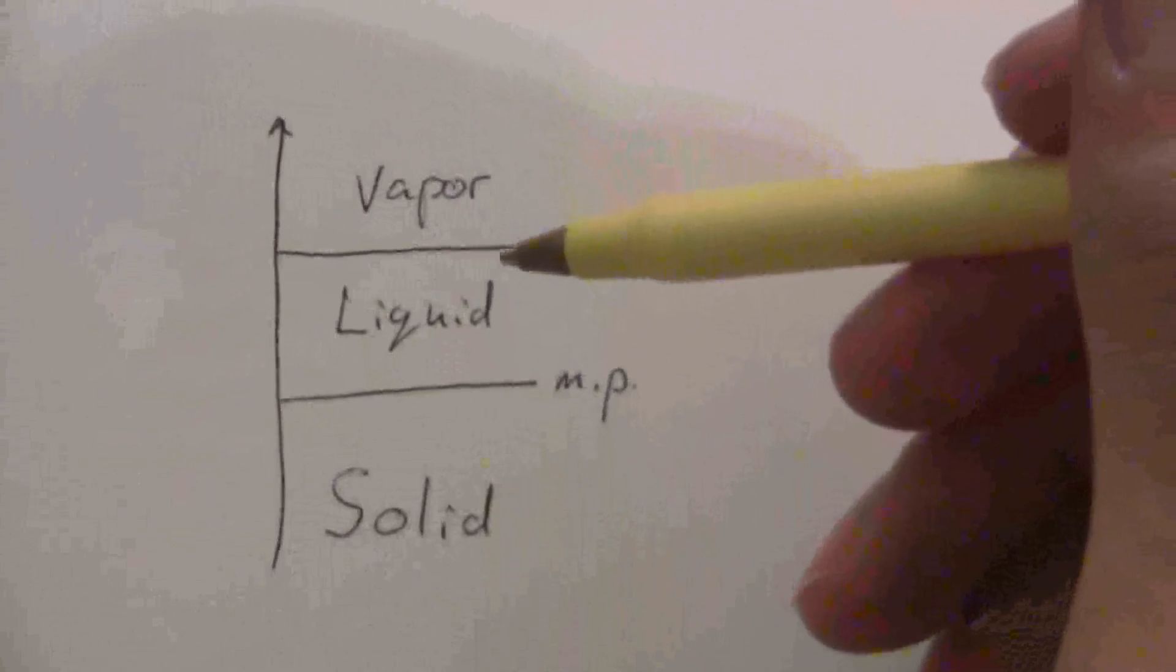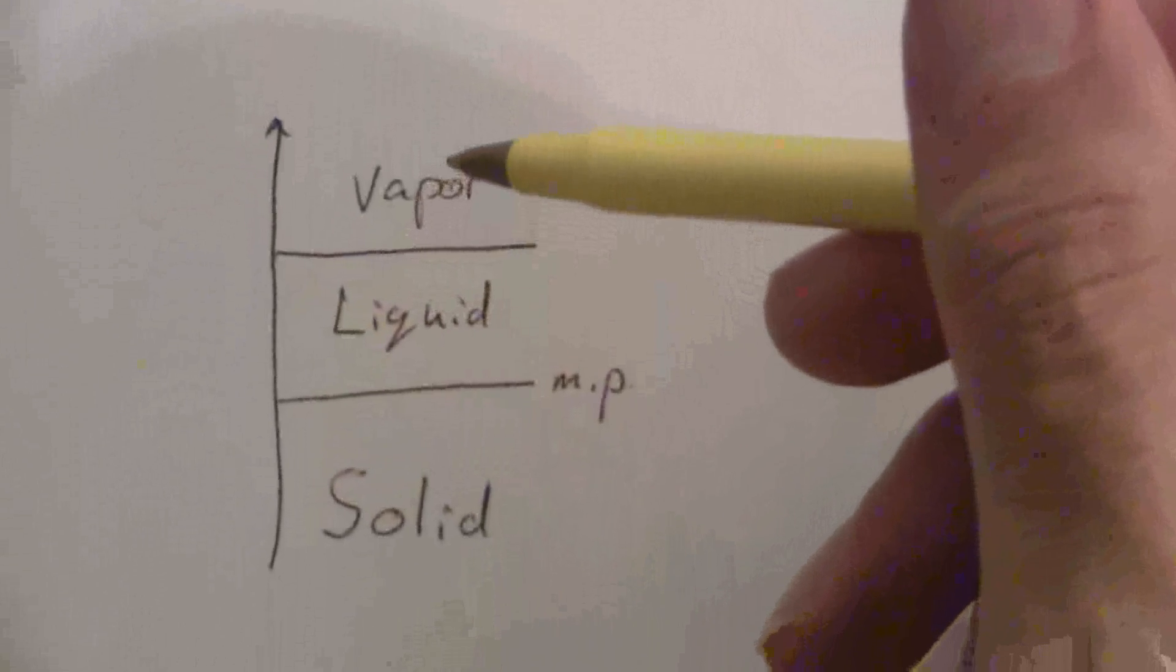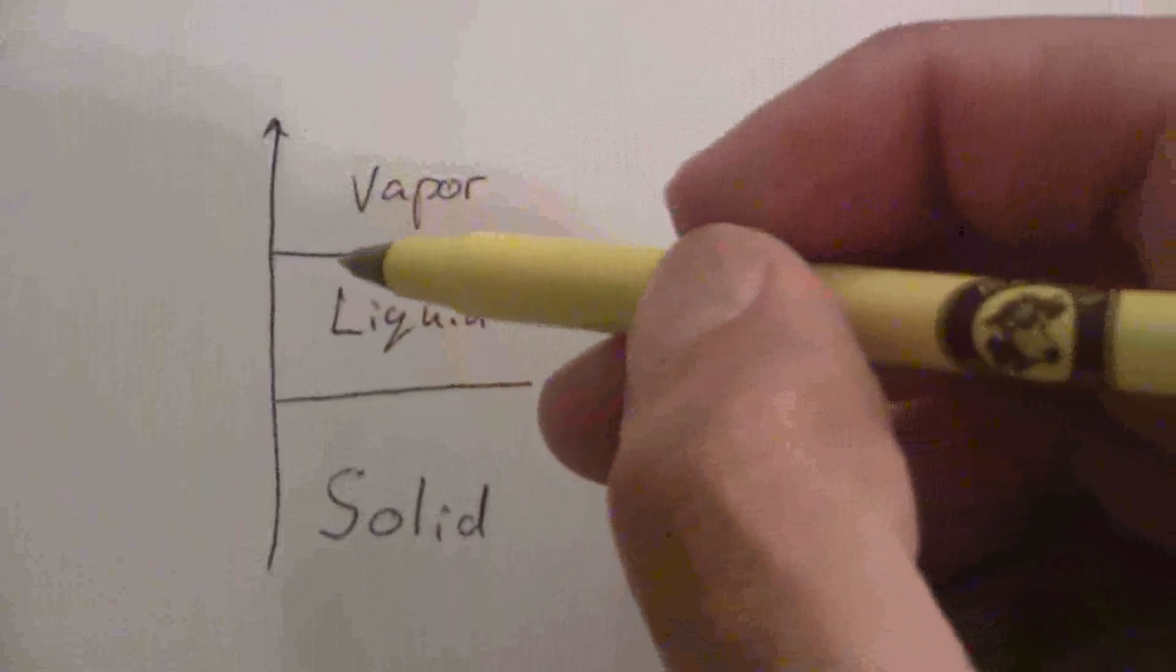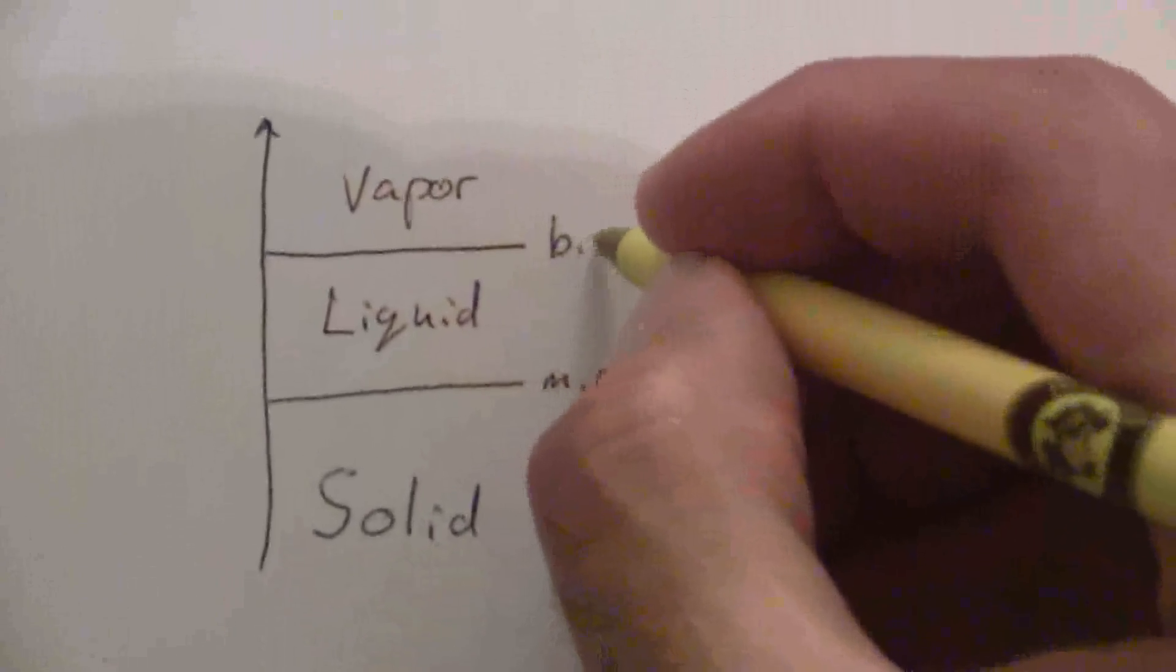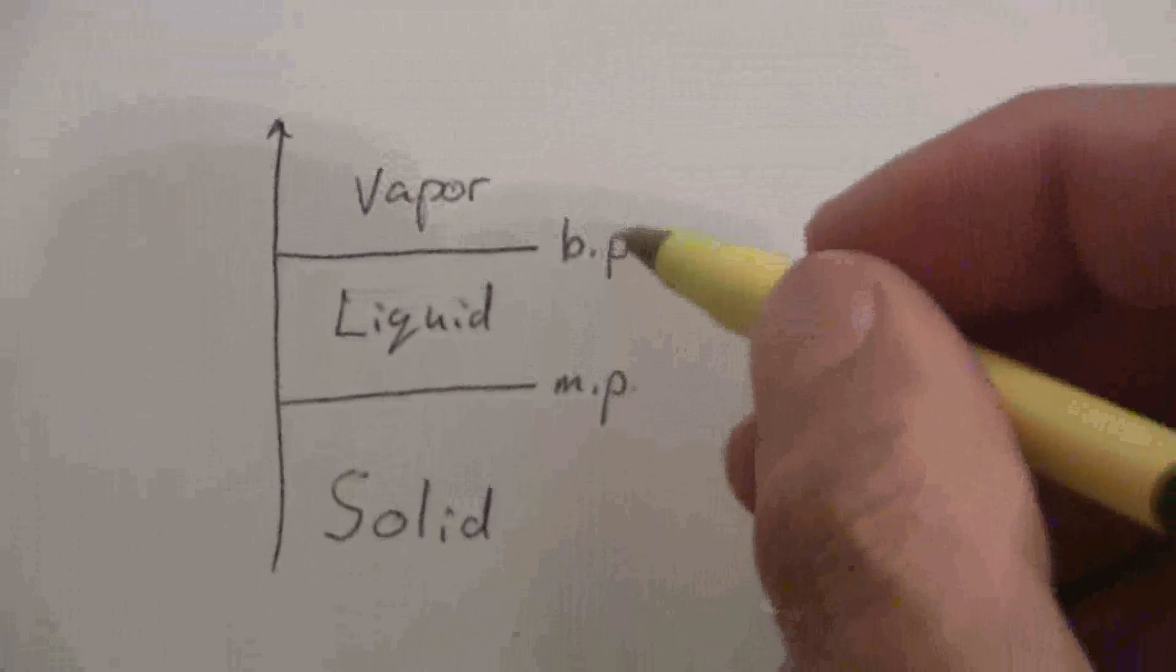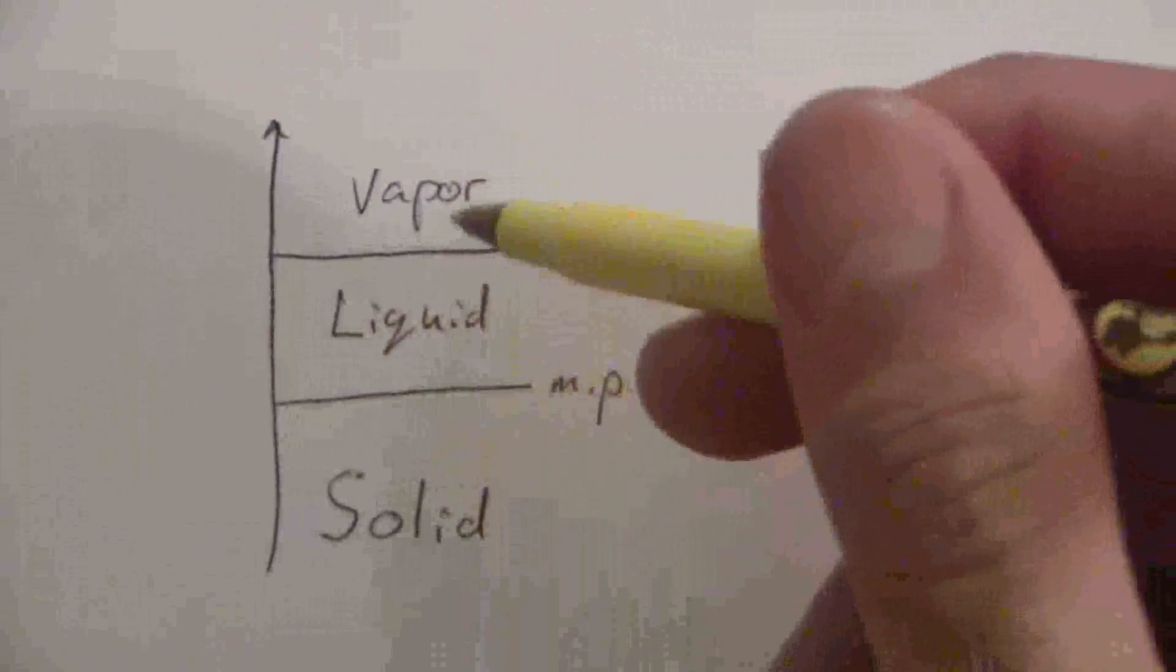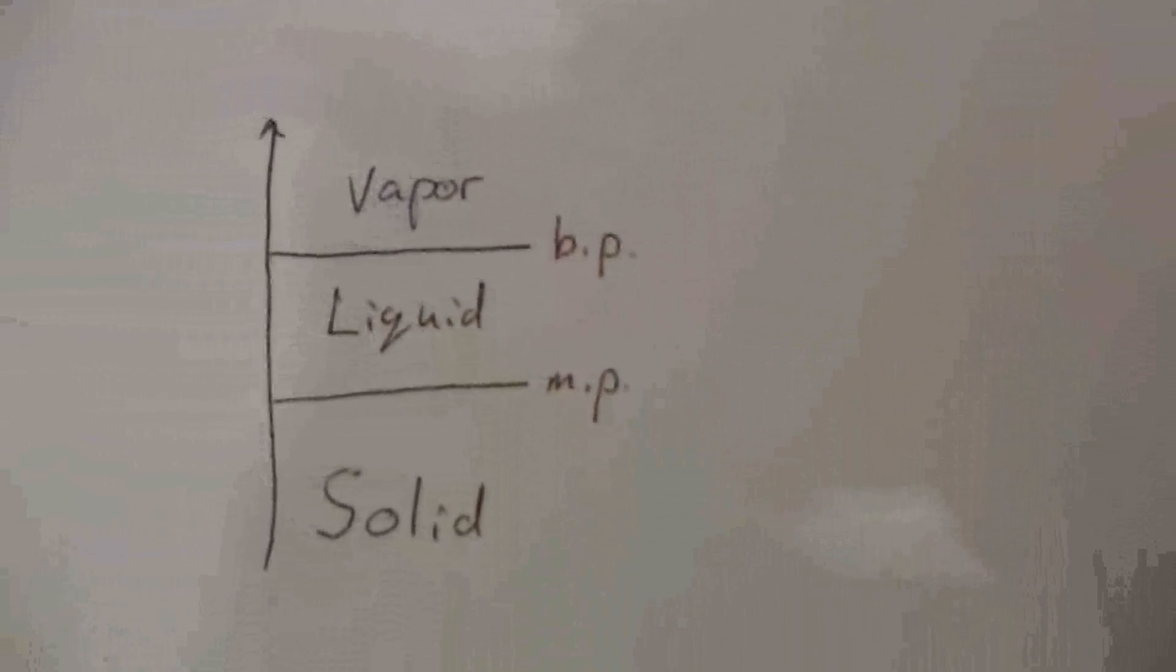And then liquid to vapor, when you increase the temperature and it vaporizes, we call that the boiling point. So, we have the melting point and the boiling point. If we know those two points for a substance, we can tell what state of matter it's going to be in at any given temperature.